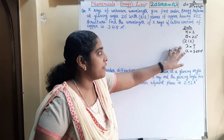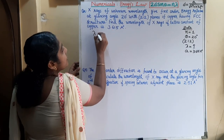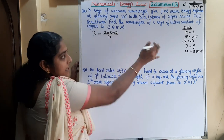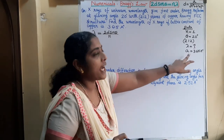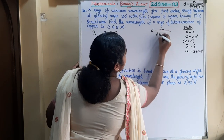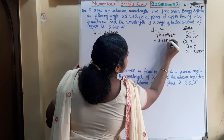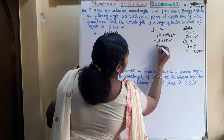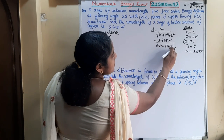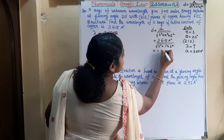From Bragg's law, 2D sin theta equals N lambda, so lambda equals 2D sin theta divided by N. Since lattice constant A is given instead of D, we find the interplanar spacing: D equals A divided by root of H squared plus K squared plus L squared, that is 3.615 Angstroms divided by root of 2 squared plus 1 squared plus 2 squared, which gives 3.615 divided by root of 9, and root 9 is 3, so D equals 1.205 Angstroms.